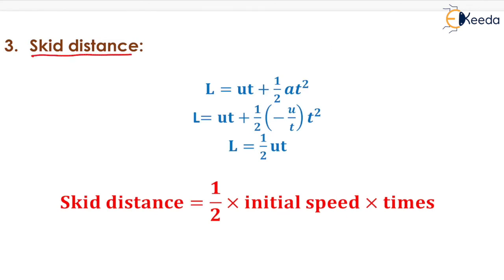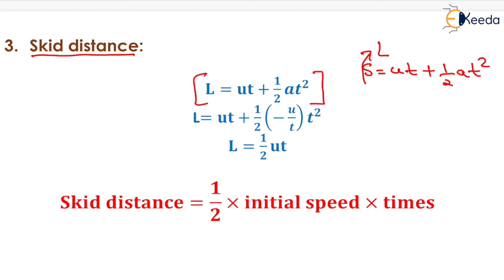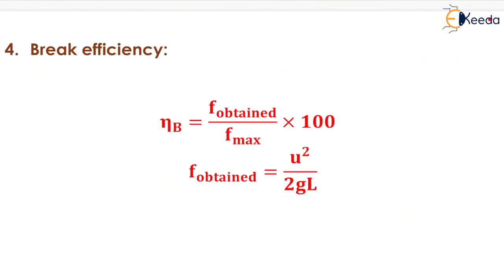For skid distance, using S = UT + (1/2)AT² and substituting A = −U/T, we get L = UT + (1/2)(−U/T)·T². On solving, skid distance L = (1/2)·U·T, which is half of initial speed multiplied by time.